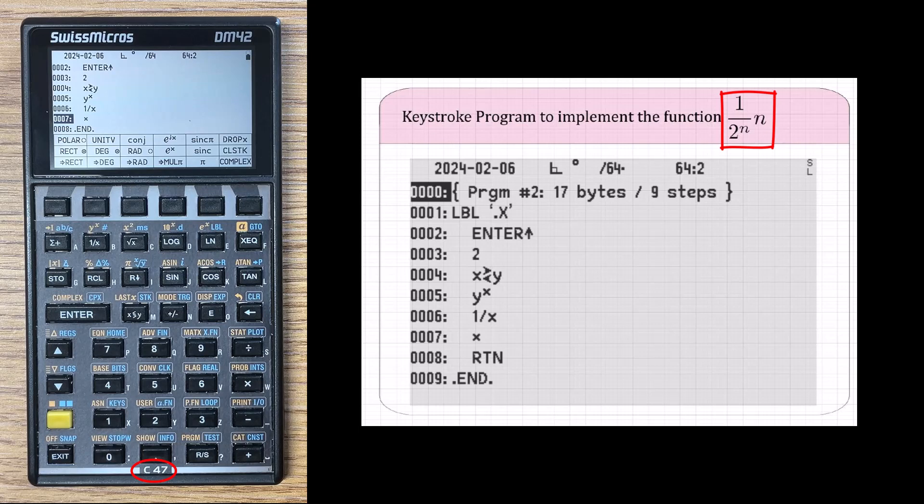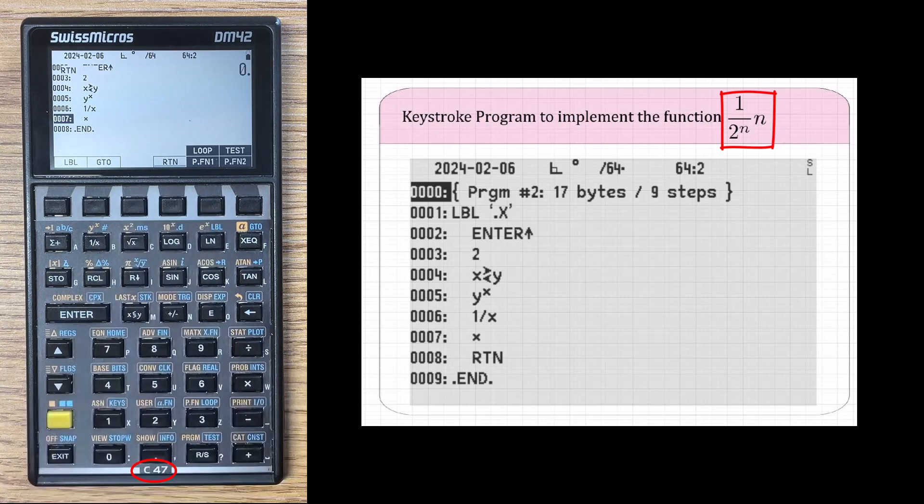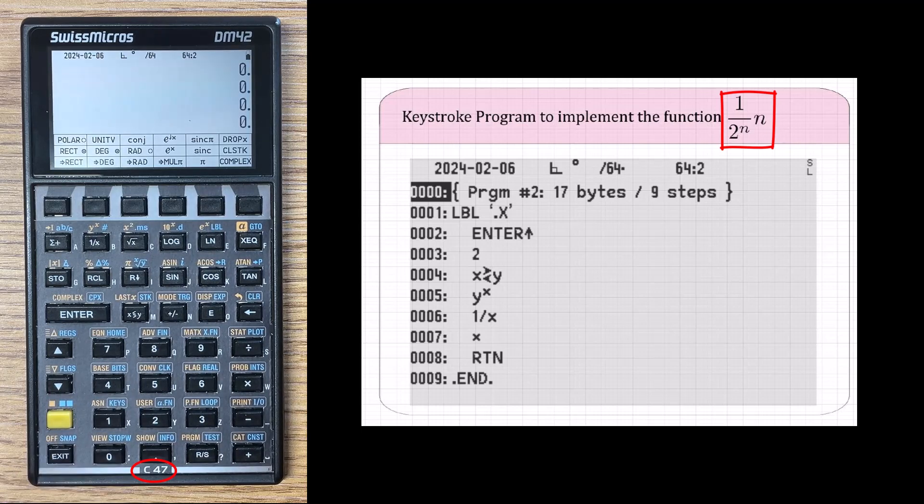And I've now got one over two to the N times N and I can end this program. So I see a lot of programs use return. I don't know if return is required, but I'm going to use it assuming it's a good practice. So to get the return, I'm using the yellow programming function menu and return is on the F4 key. And now I'm going to exit and exit out of this.